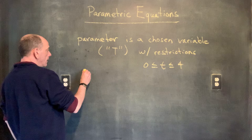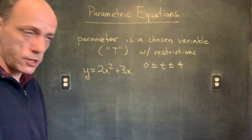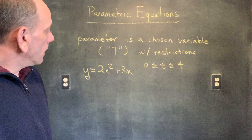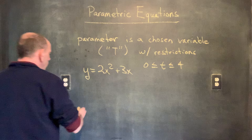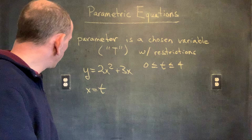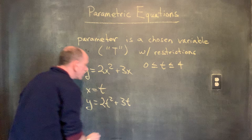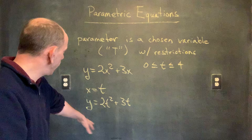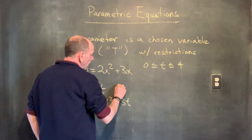Let's say we have Y equals 2X squared plus 3X — just a normal rectangular equation, a parabola opening upward. We can parameterize it in multiple ways. If I say X equals T, then Y is simply 2T squared plus 3T. There's our parameterized set of equations. I can restrict T — say negative 2 is less than or equal to T is less than or equal to 1. At T equals negative 2, X is negative 2 and Y is 2, giving starting point (−2, 2). At T equals 1, X is 1 and Y is 5, giving endpoint (1, 5).